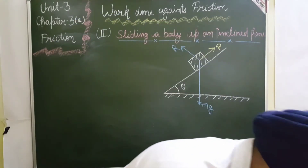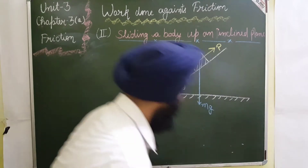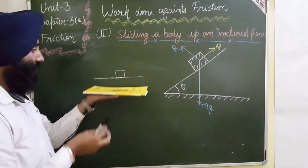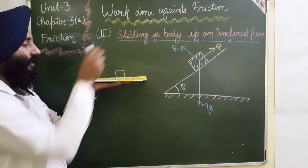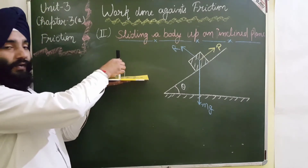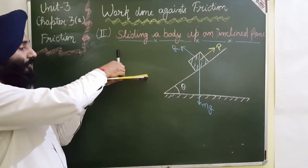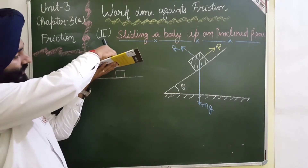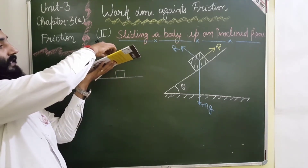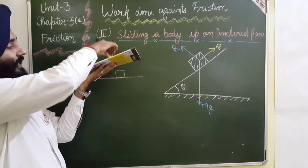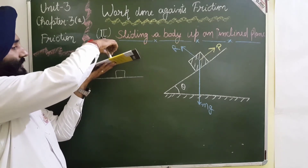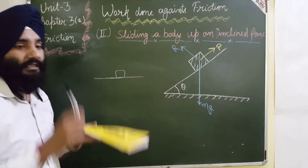If it is not clear, consider: here we have a plane and a body on it. The reaction opposes the body perpendicular to the plane. As we move the body to different positions along the inclined surface, the direction of reaction changes accordingly. But weight is always vertical downward, while the normal reaction is always perpendicular to the surface.